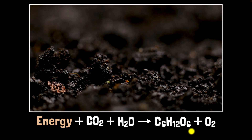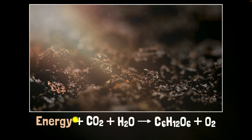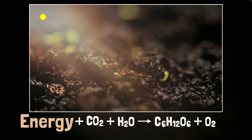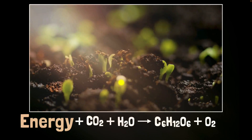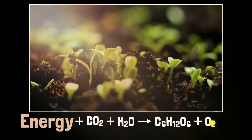This equation is not really balanced, but that's okay. What's important is that the energy is on the left side, which means that energy is being absorbed. And that energy comes from the sunlight, so the sun's energy is being absorbed to produce sugar and oxygen molecules.